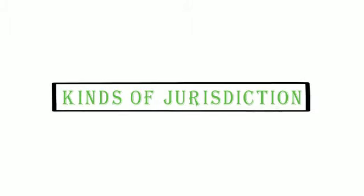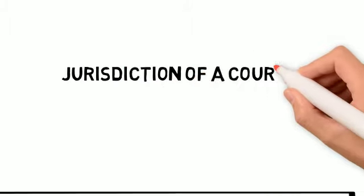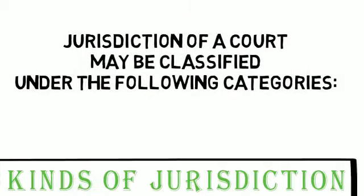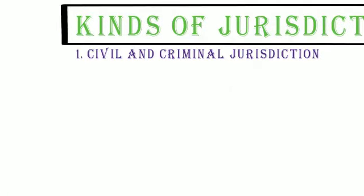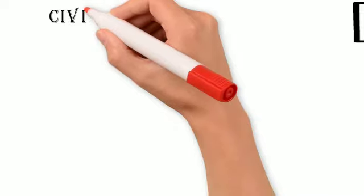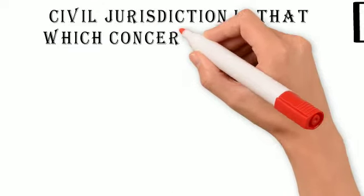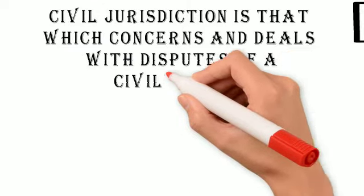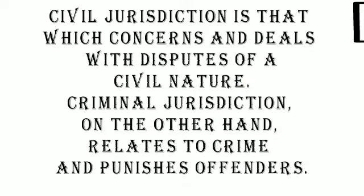Jurisdiction of a court may be classified under the following categories. 1. Civil and Criminal Jurisdiction: Civil jurisdiction is that which concerns and deals with disputes of a civil nature. Criminal jurisdiction, on the other hand, relates to crime and punishes offenders.